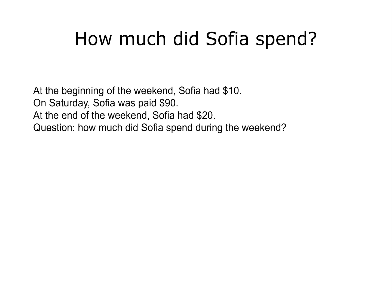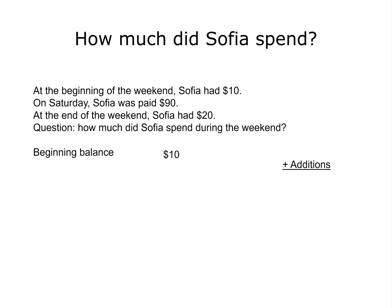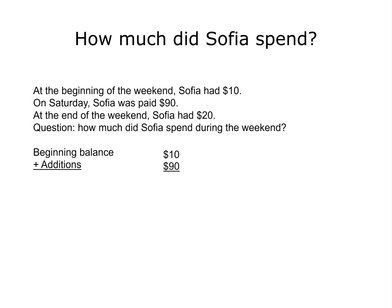Let's take this one step at a time. What was Sophia's beginning balance of cash? It was $10. How much was added to the beginning balance of $10? $90 were added when she got paid. So how much was available for her to spend? Obviously, $100.